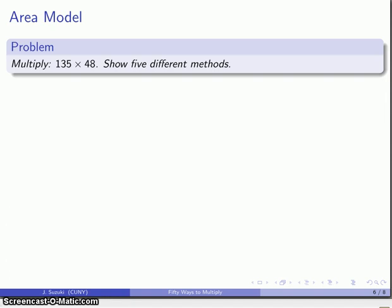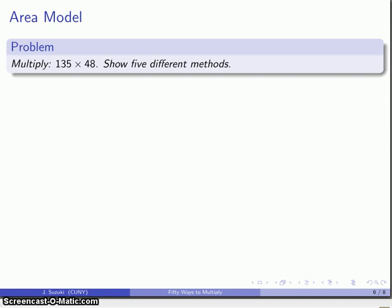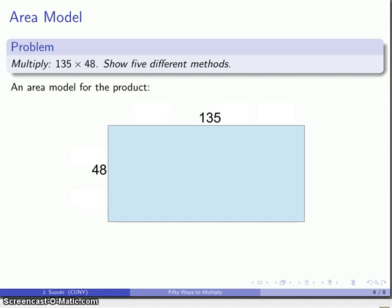Alright, so that's three methods. How about an area model? So, we're going to multiply 135 times 48. Let's go ahead and draw an area model for the product. That's going to be a rectangle. 48 by 135.